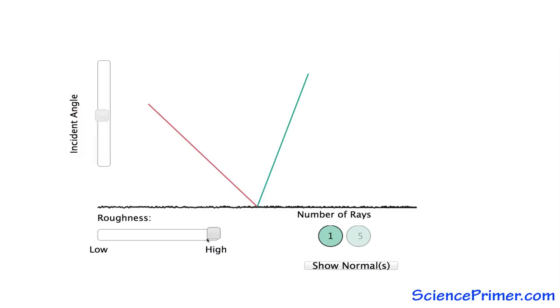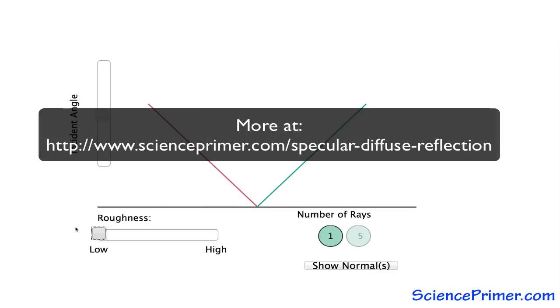Specular reflection is useful. Without it, we would not have cameras or mirrors. However, it is diffuse reflection that is central to our ability to see the world. Aside from the limited number of luminous objects, such as light bulbs and the sun, everything we see around us is visible because of diffuse reflection.